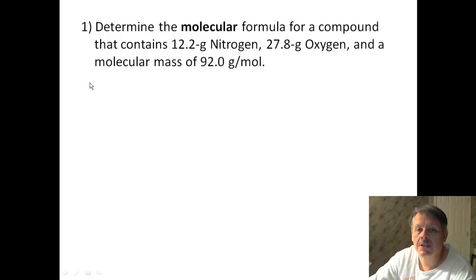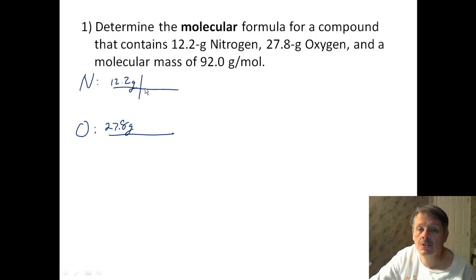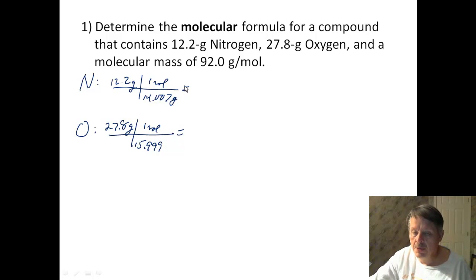All right. So we have something that contains 12.2 grams of nitrogen and 27.8 grams of oxygen. So now what I have to do is figure out what my ratios are here. And the way to do that is figure out what my ratios are of moles to moles. Because if I look at something like H2O, that means two moles of hydrogen to one mole of oxygen. So nitrogen is 14.007 grams in one mole. And oxygen is 15.999 grams in one mole. When I multiply them out, I get 0.871 and I get 1.74. And clearly what you have here is a one to two relationship. Divide both by 0.871. You get this one being 1 and this one being 2.